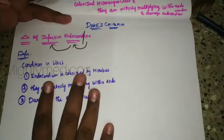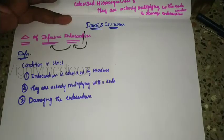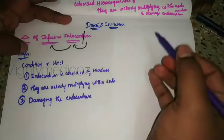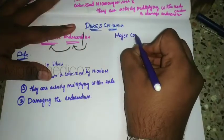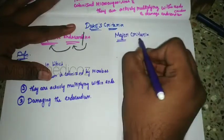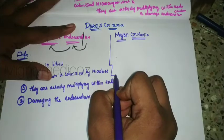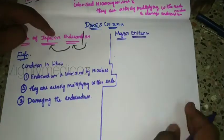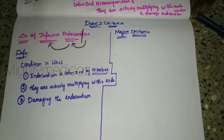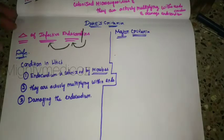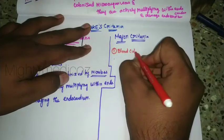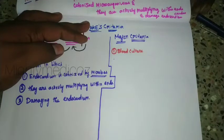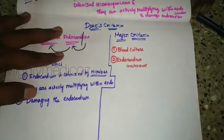So this is the definition of infective endocarditis. Now we are entering into the criteria. The criteria consists of major criteria and minor criteria. There are two major criteria. The first major criterion is blood culture, and the second major criterion is endocardium involvement.